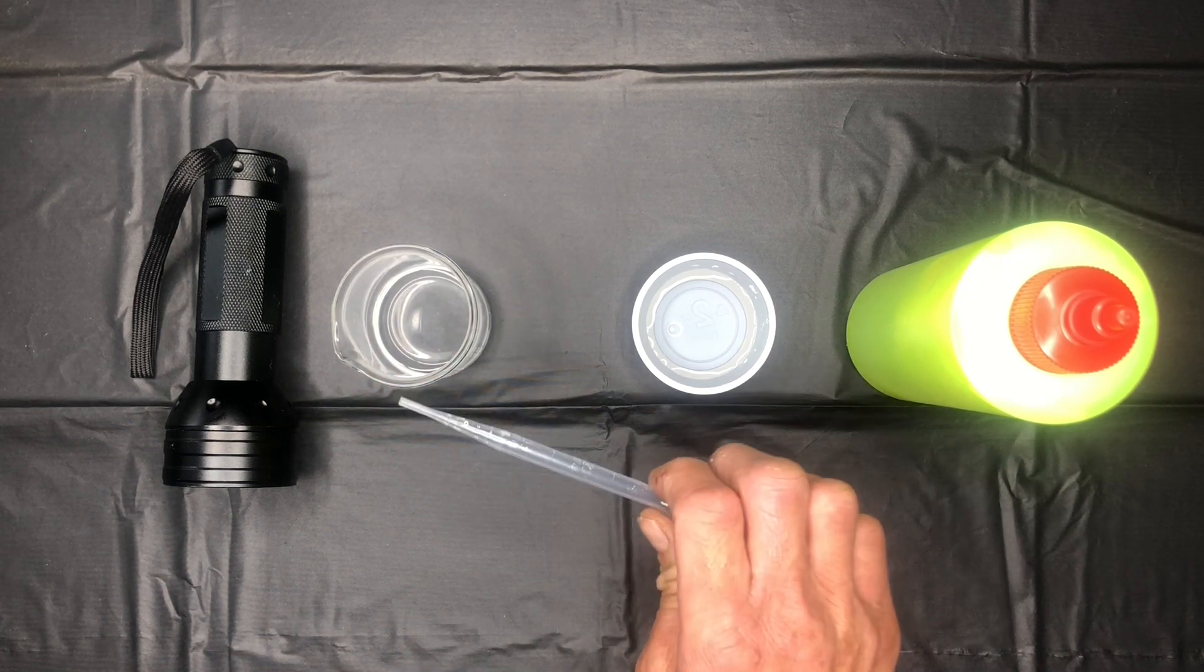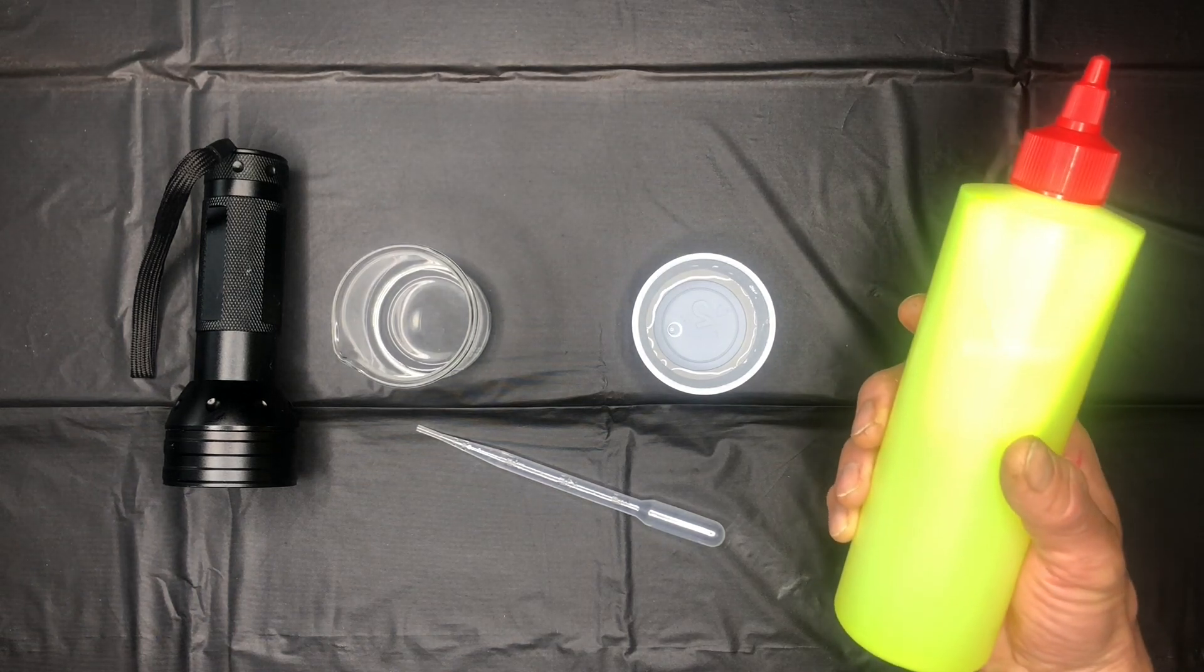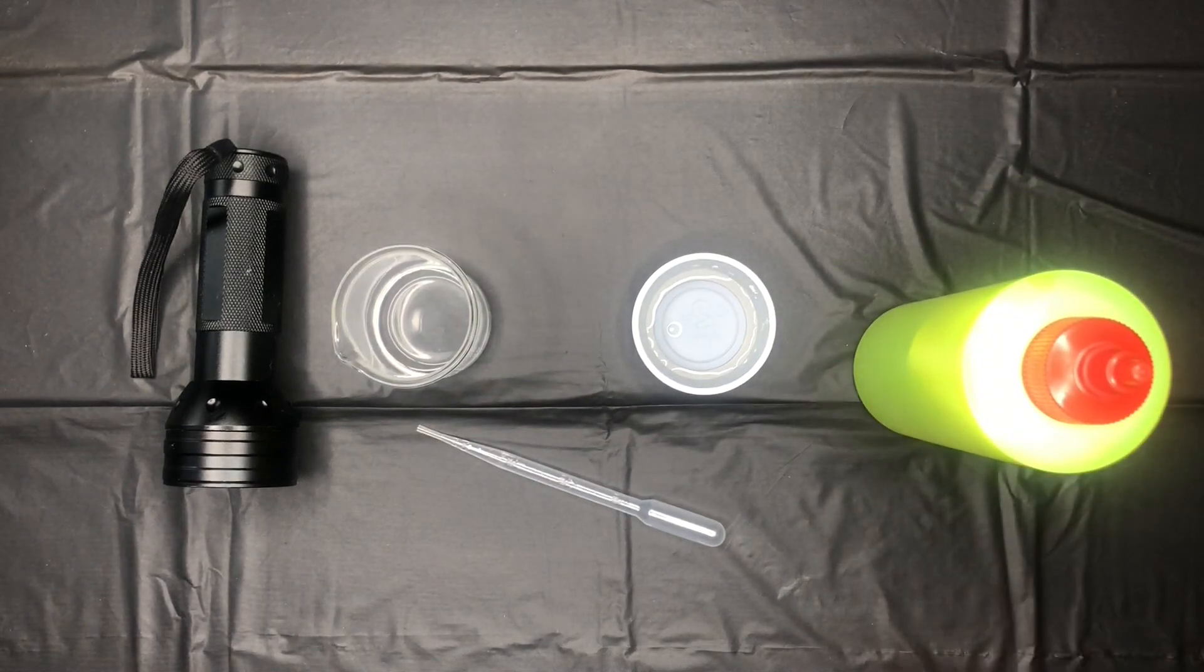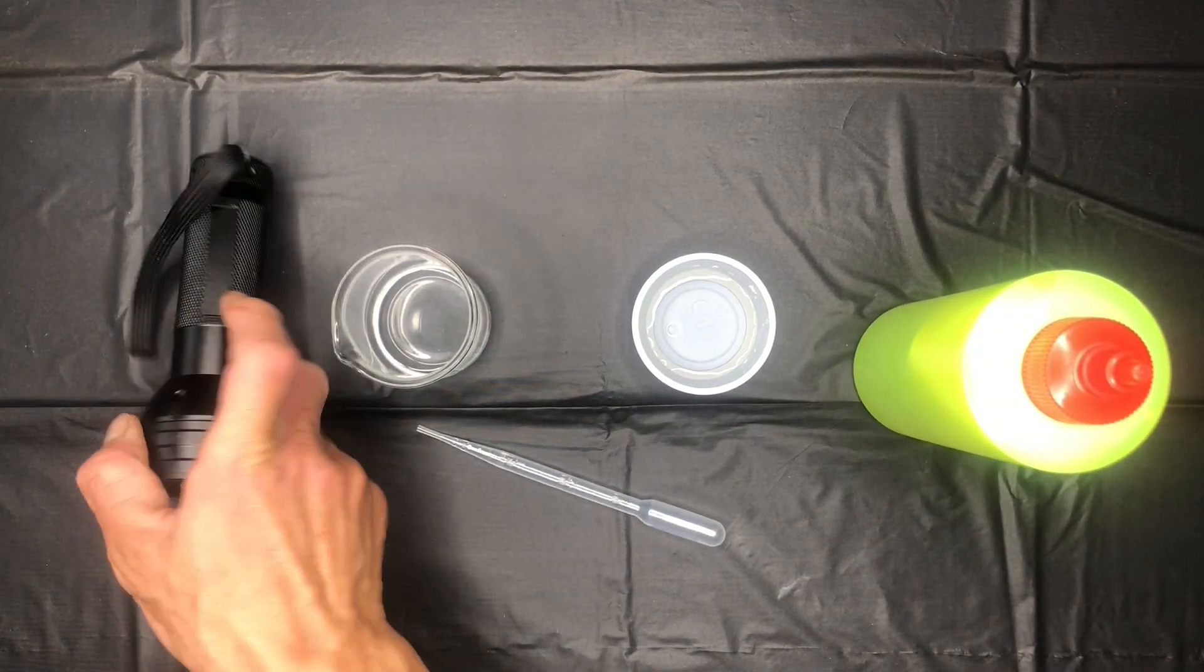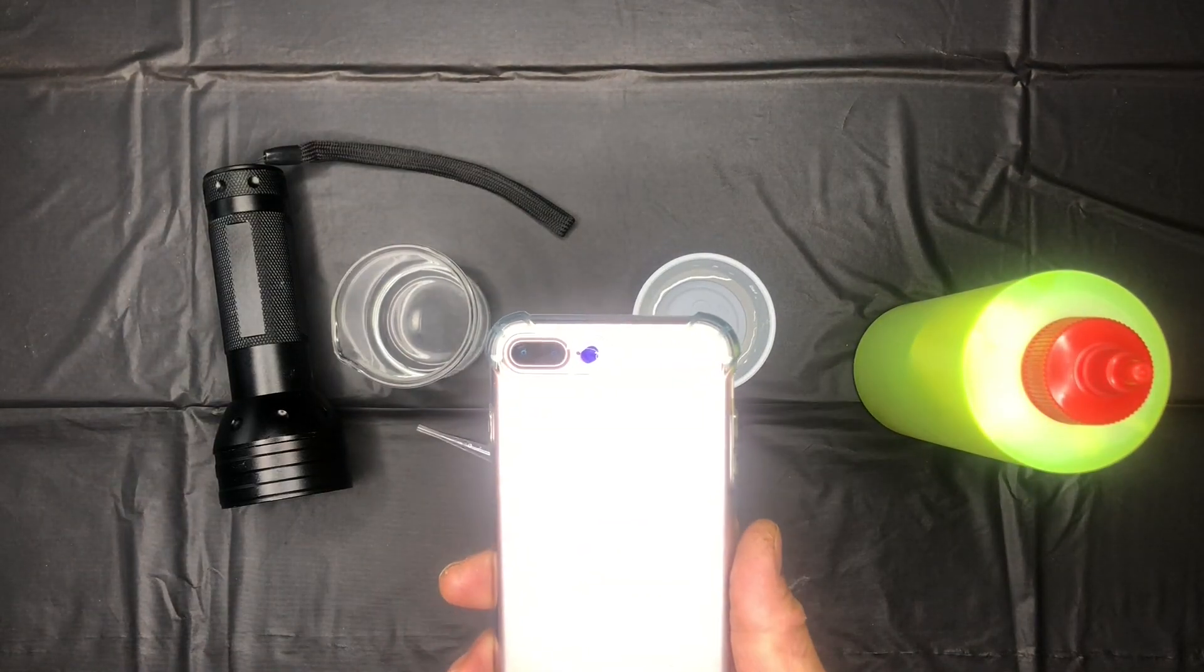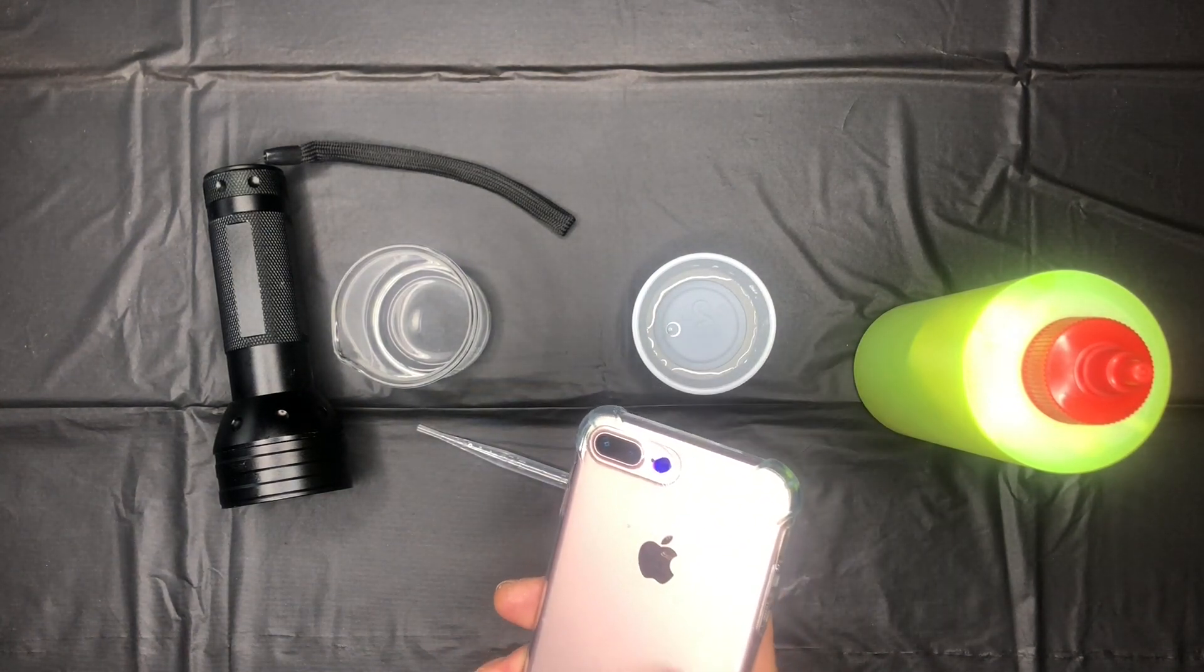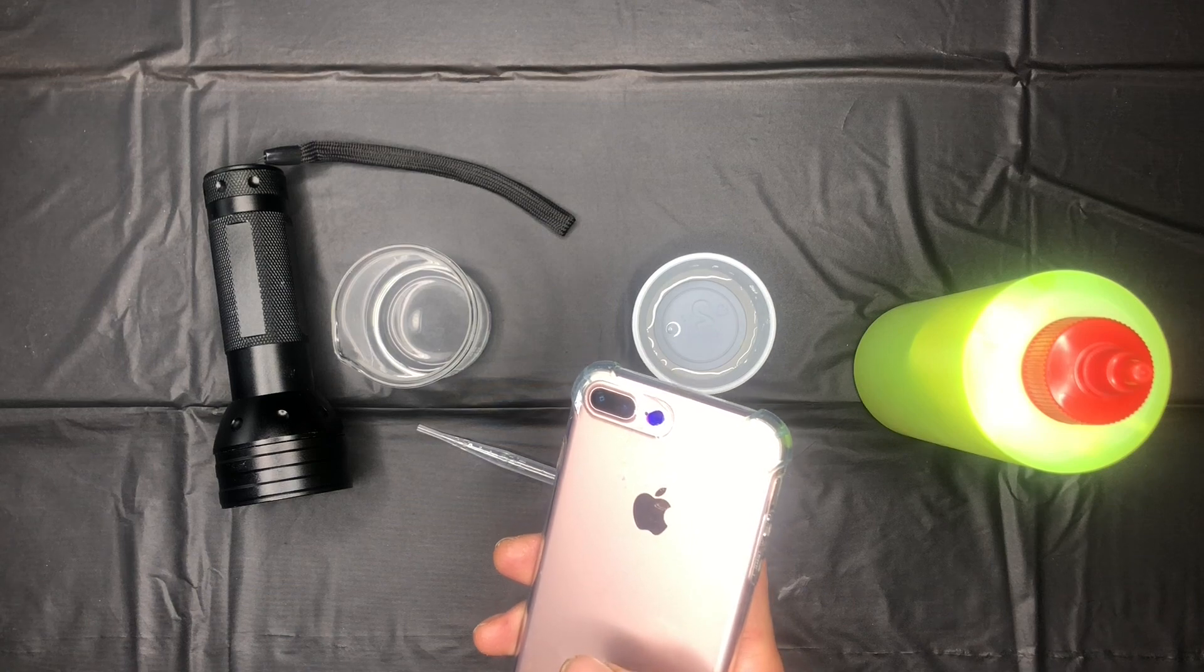You'll also need a pipette, a fluorescent marker solution—if you do not have a fluorescent marker solution, we made this from a previous video that is linked in the description—as well as a UV light. If you do not have a UV light, we have a video on how to turn the light on your phone into a UV light. This is also linked in the description.